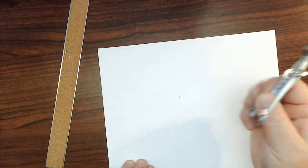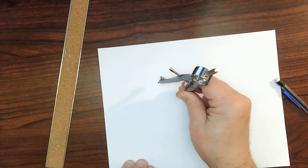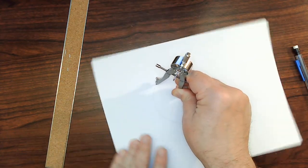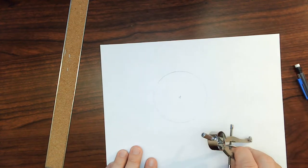First thing I'm going to do is mark the center point, put the pivot on the center point. I actually find it easier to turn the paper instead of the compass. There we go. That's my circle.